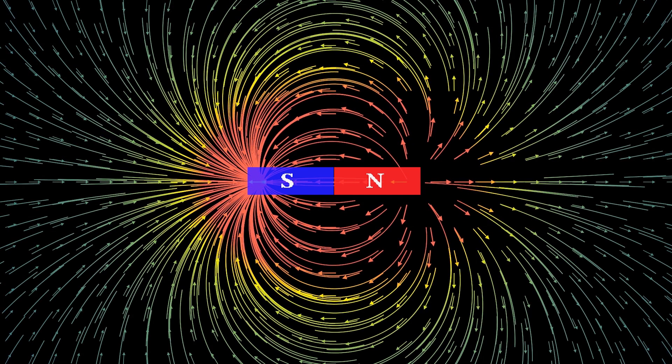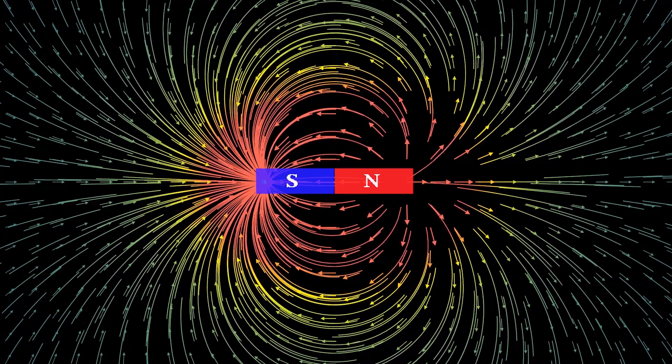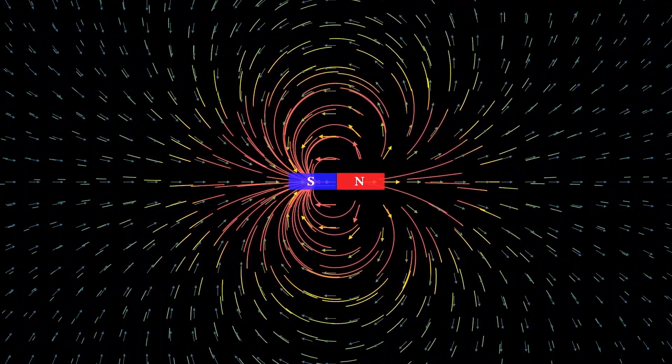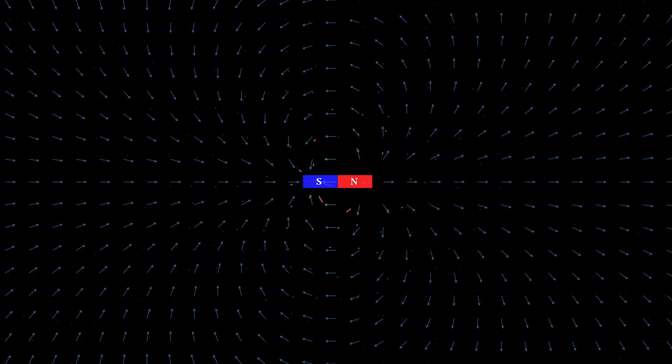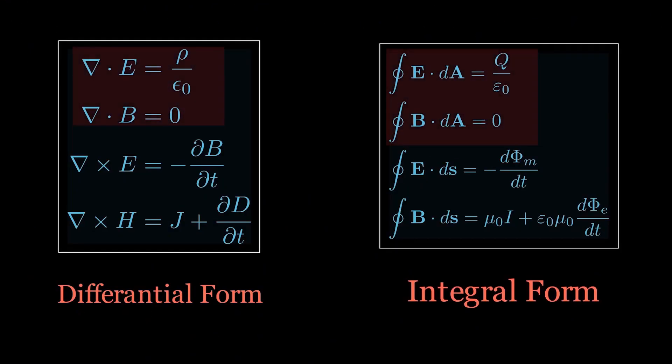If you take a magnet and keep breaking it into smaller and smaller pieces, you always get two poles, south and north. The magnetic flux generated by the north pole of the magnet always gets pulled by the south pole, so the net flux passing through the closed surface is always zero. These two equations give us complete understanding of the behavior of static electric charge and magnetic dipole.